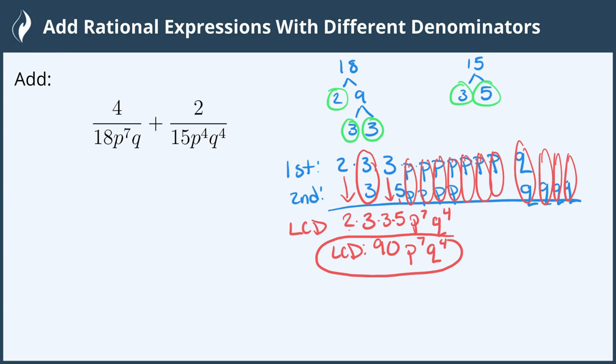So our first denominator 18 needs to be multiplied by 5 to get to 90 and we already have p to the 7th but I am missing 3 of the q's. So I need q to the 3rd because there's one q here.